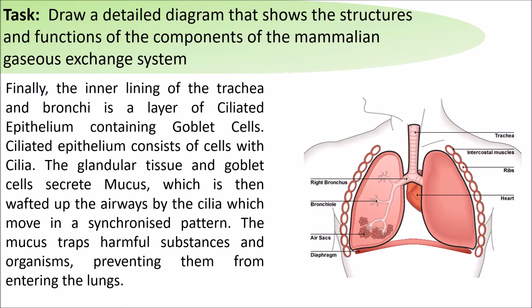Finally, the inner lining of the trachea is layered with ciliated epithelial cells containing goblet cells. Ciliated epithelium consists of cells with cilia. The glandular tissue and goblet cells secrete mucus, which is then wafted up the airways by the cilia back towards the epiglottis, where you will then be able to swallow the mucus down into your stomach, and any harmful microorganisms collected there will get digested.